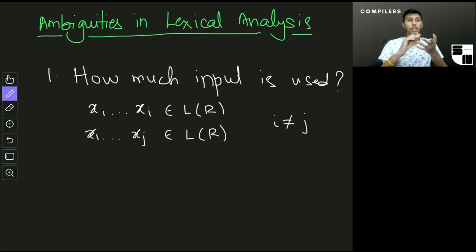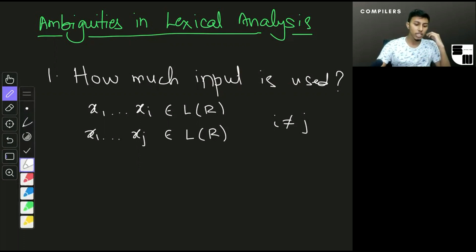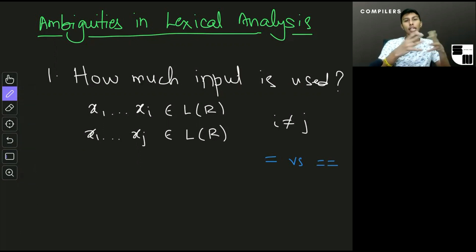This is exactly the situation that we discussed earlier, which is something like equals versus equals equals. In this specific scenario, i is going to be one and j is going to be two. Equals is a valid token class, equal equals is also a valid token class, and that's just going to be an ambiguity whether it should be taken as an equals or a double equals.